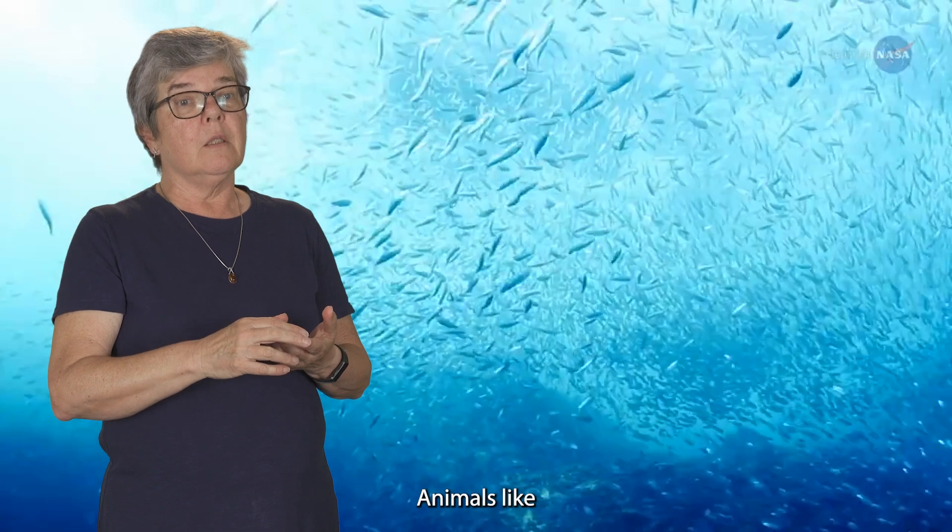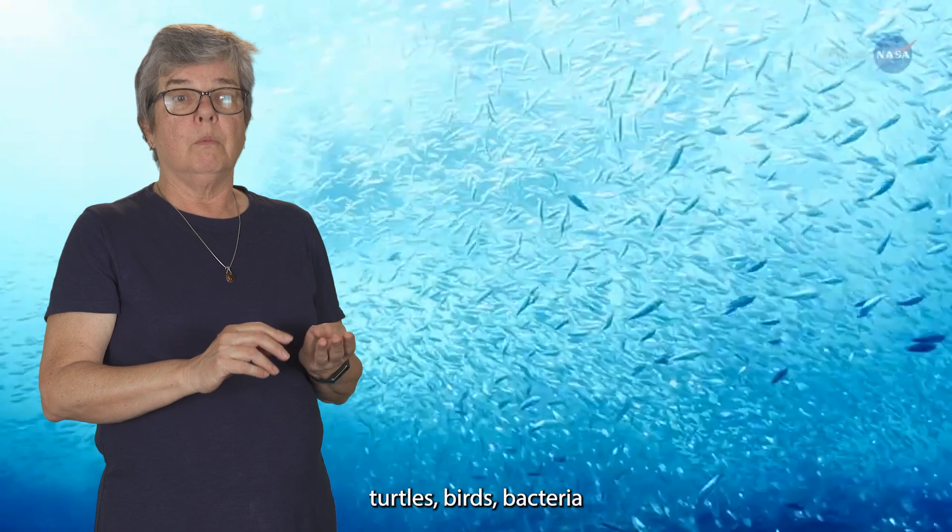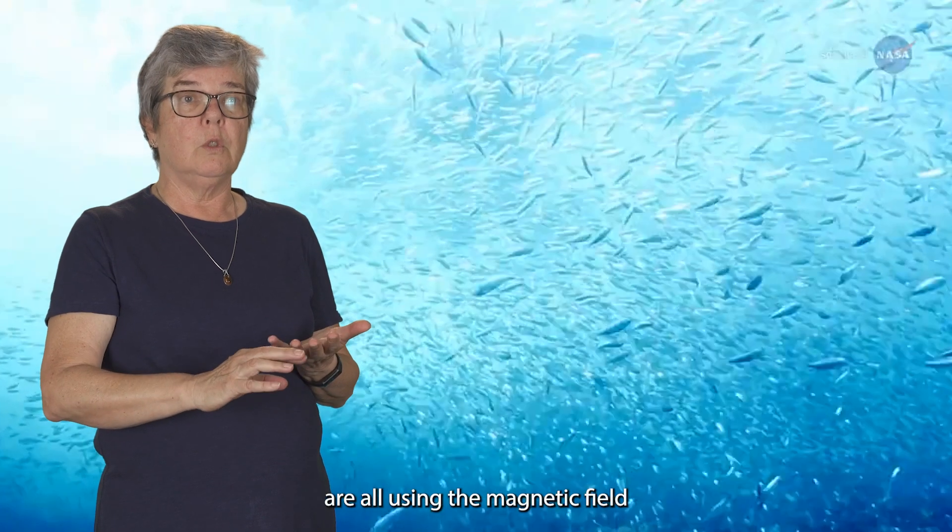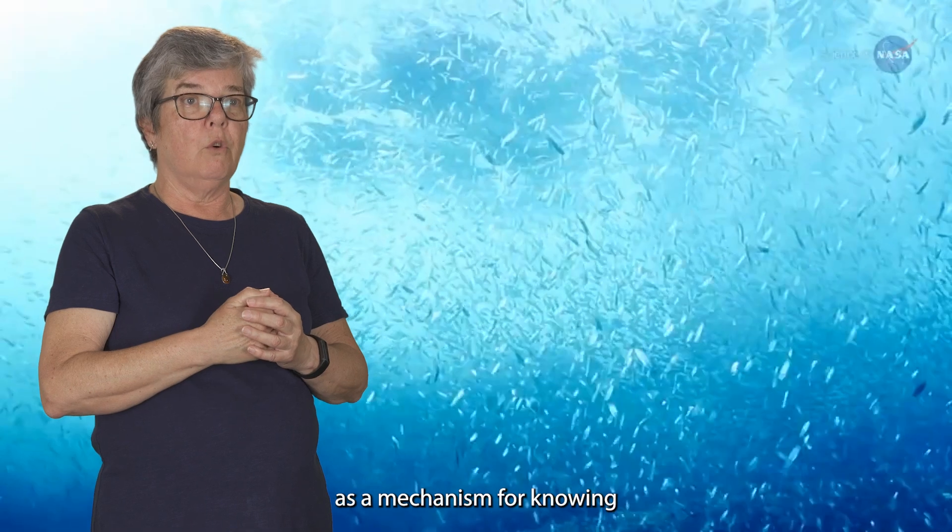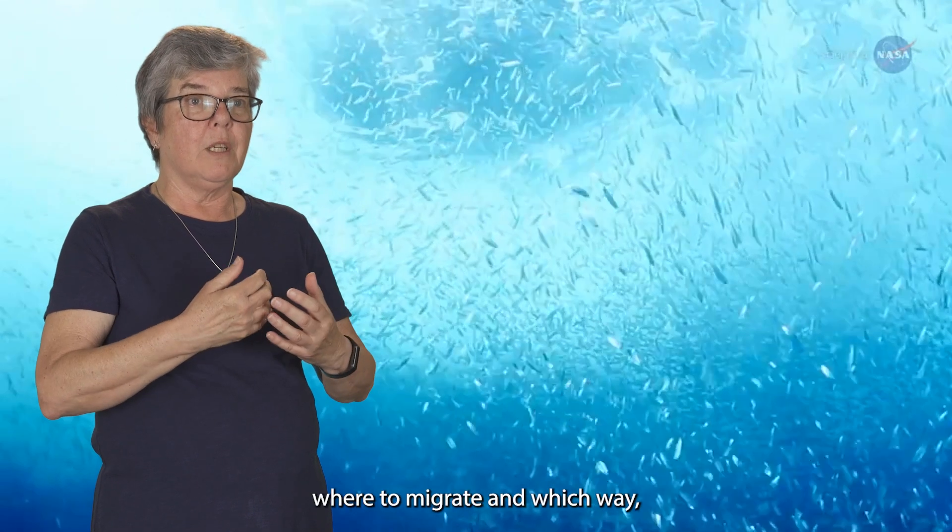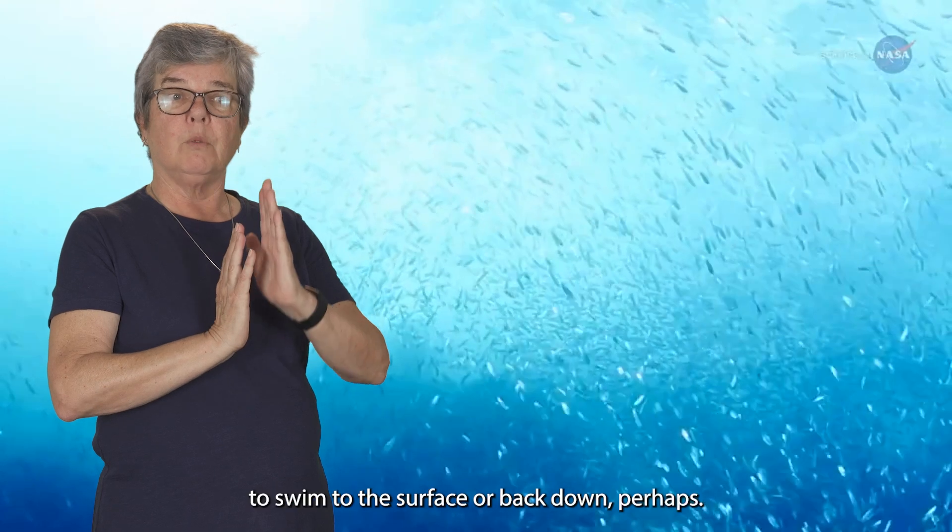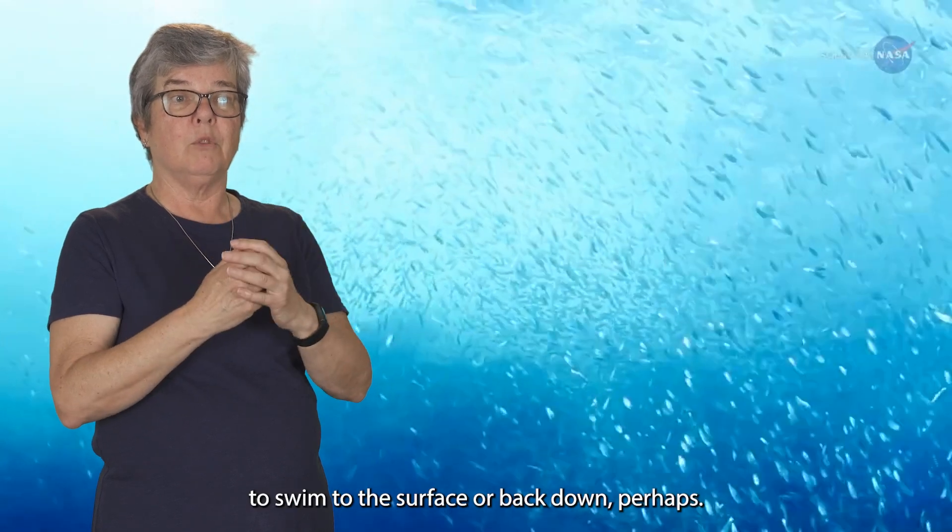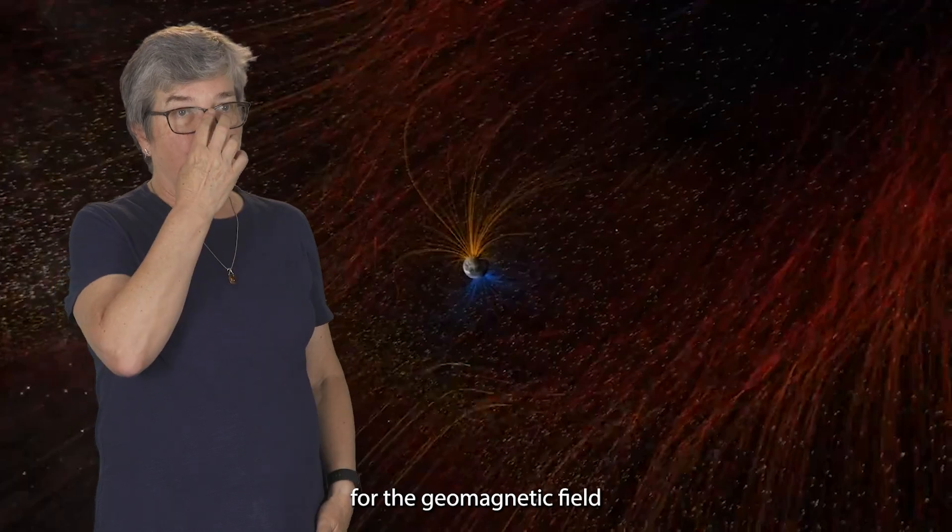Animals like sharks, crabs, turtles, birds, bacteria are all using the magnetic field as a mechanism for knowing where to migrate and which way. In the case of bacteria, they know which way to swim to the surface or back down perhaps.